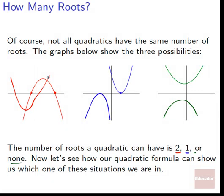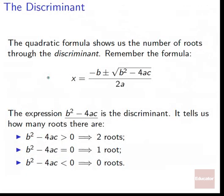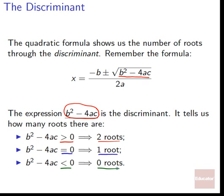The quadratic formula actually shows us which situation we're in through the discriminant. The expression b² − 4ac is the discriminant. If b² − 4ac > 0, there are 2 roots; if b² − 4ac = 0, there is 1 root; and if b² − 4ac < 0, there are 0 roots — each corresponding to those cases on the graph. The discriminant tells us how often our parabola manages to cross or touch the x-axis.